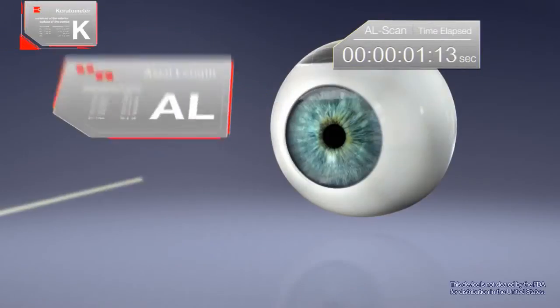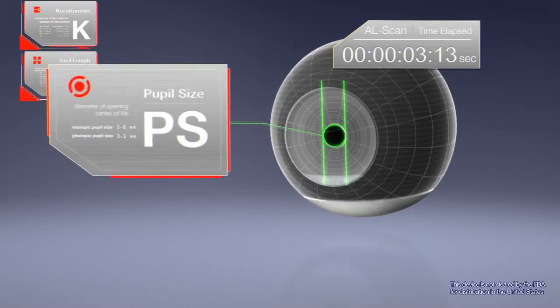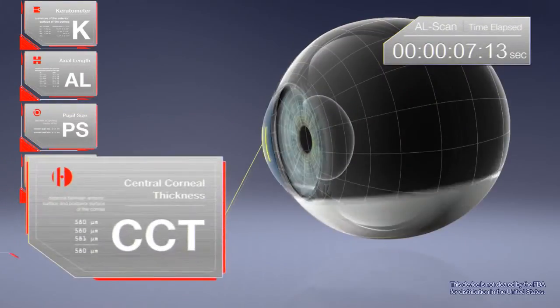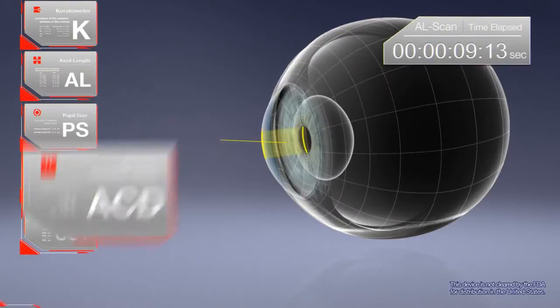Corneal curvature radius, axial length, pupil size, white-to-white distance, central corneal thickness, and anterior chamber depth.